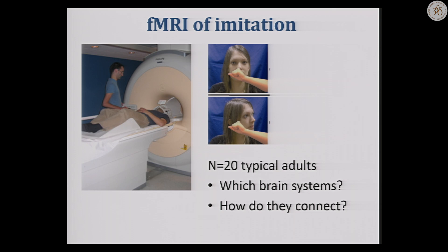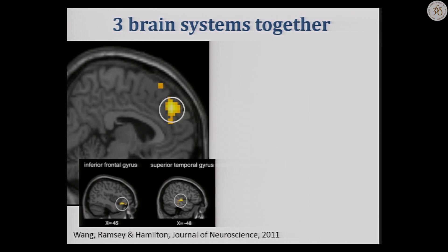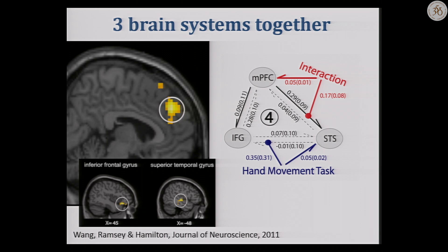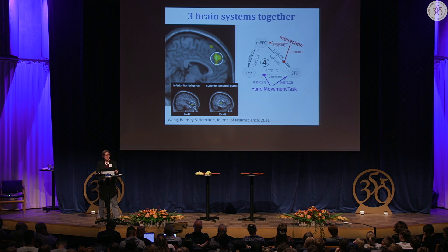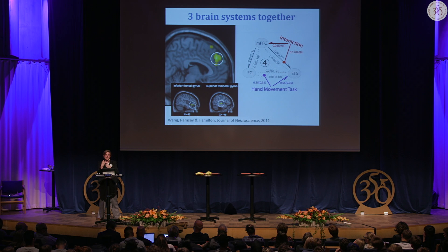We put participants in an MRI scanner and had them do the hand action task with direct and averted gaze combined with hand opening and closing movements. We find activation in three brain systems: medial prefrontal cortex, inferior frontal gyrus, and superior temporal sulcus — another area known to input to the other two. Connectivity analysis gives us models of how these brain areas connect together, showing medial prefrontal cortex acting as a controller, influencing the other two, and when eye contact changes behavior, it changes the strength of the connection from medial prefrontal cortex down to STS.